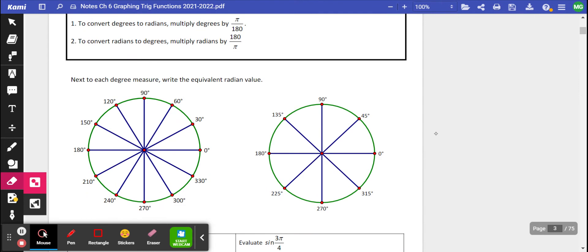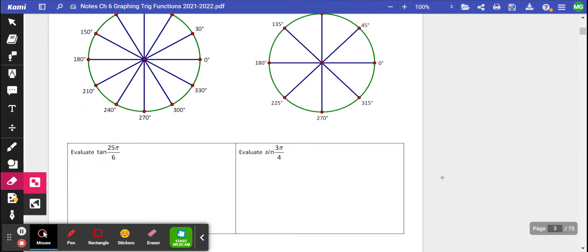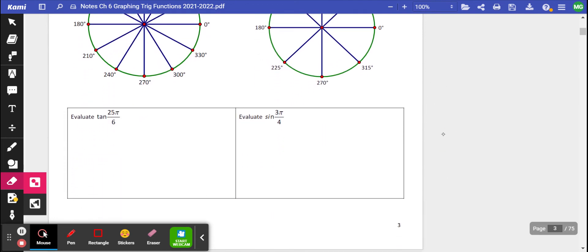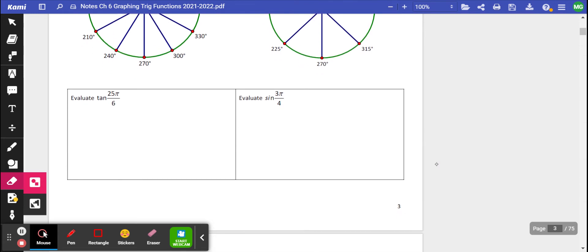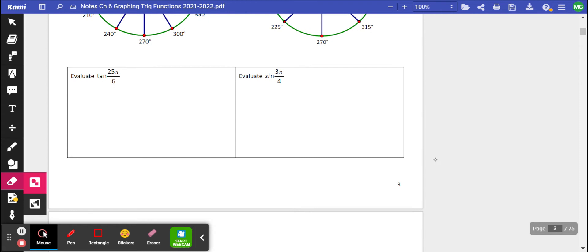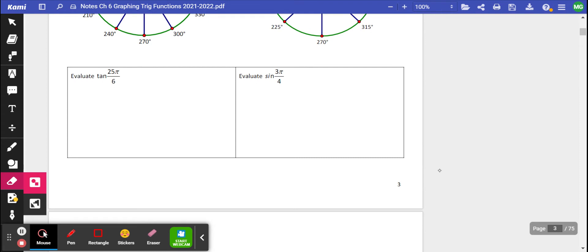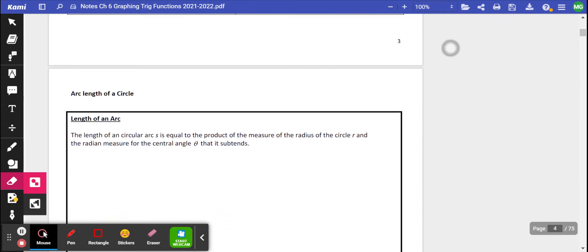What I would like for you to do is go ahead and write next to each degree measure the equivalent radian, and try to re-memorize those if you've forgotten them. The two problems down here, I'd like for you to draw them out and then evaluate: what is the sine of 3π over 4? What is the tangent of 25π over 6? So you're going to do those on your own.